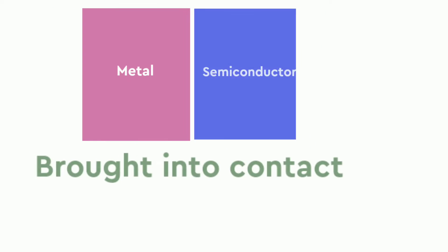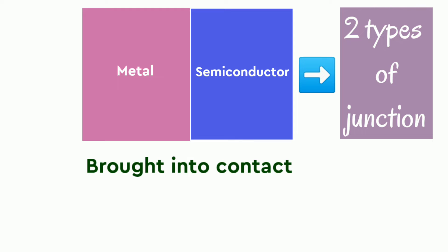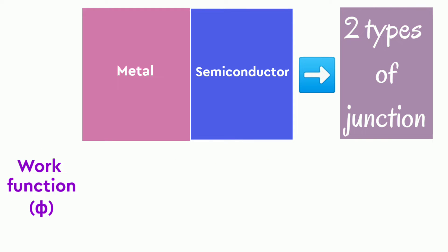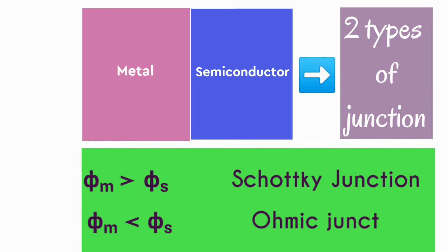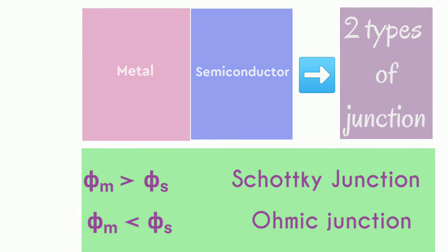When a metal and a semiconductor are brought into contact, there are two types of junctions formed depending on the work function of the semiconductor and its relation with the metal. When the work function of the metal is larger than that of the semiconductor, the junction formed is known as Schottky junction. When the work function of the metal is smaller than that of the semiconductor, the junction is known as ohmic junction.